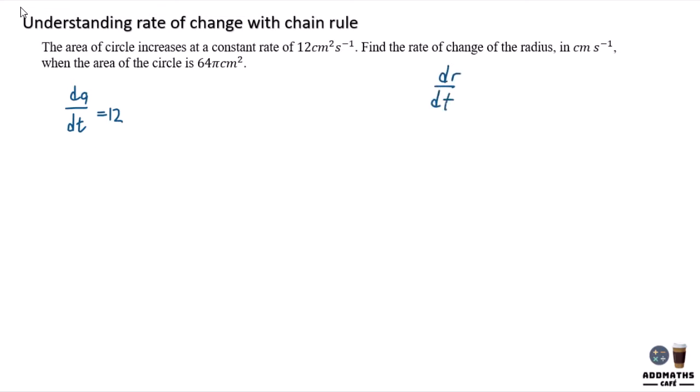Find the rate of change of radius means you are required to find dr/dt. The area of the circle is 64π. To find dr/dt, use the chain rule: dr/dt equals dr/dA times dA/dt. You are given dA/dt, but you do not know dr/dA yet.